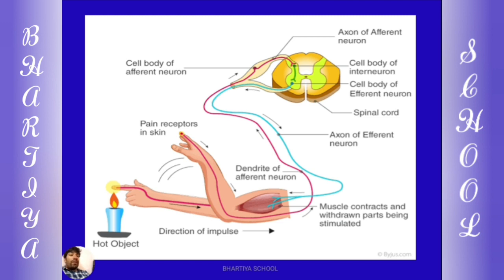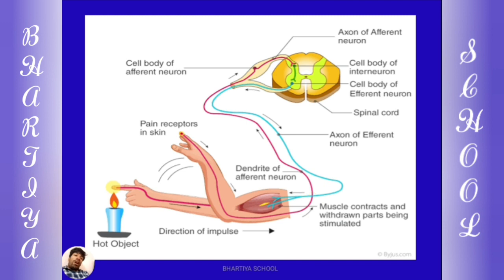Impulse central nervous system के अंदर से — यह impulse brain के पास न जाके सीधा spinal cord के पास आया है। Spinal cord से सीधा वापिस impulse nerve fibers के through muscle fibers के पास आएगा, और हम अपना हाथ वहाँ से remove कर लेते हैं।